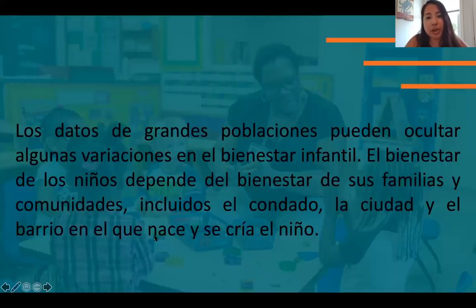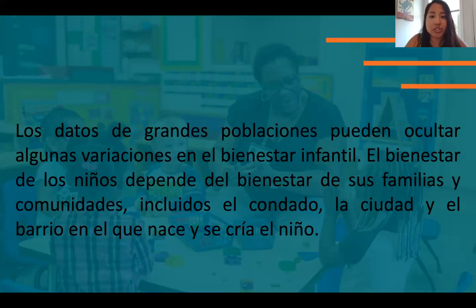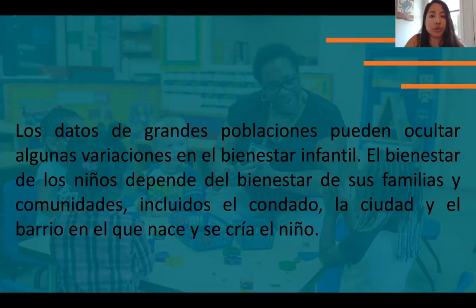One of the things we know about population data is that large population data can mask some variation in child well-being. Children's well-being depends on the well-being of their families and communities, including the county, city, and neighborhood in which a child is born and raised. So access and outcomes for children in smaller and more rural counties can be very different than those experienced by children born in larger, more metropolitan counties. Even within more well-equipped counties, there often exist broad disparities among children of different income levels and ethnicities, and that's one of the things we really want to pay attention to.